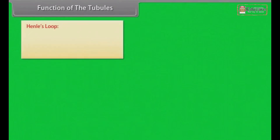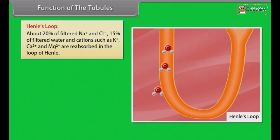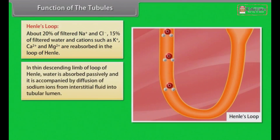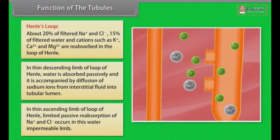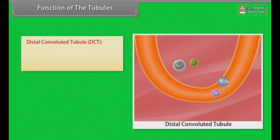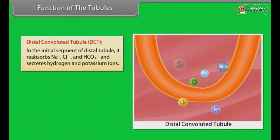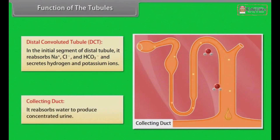Function of the Tubules — Henle's Loop and DCT: About 20% of filtered Na+ and Cl-, 15% of filtered water, and cations such as K+, Ca2+ and Mg2+ are reabsorbed in the loop of Henle. In the thin descending limb, water is absorbed passively, accompanied by diffusion of sodium ions from interstitial fluid into the tubular lumen. In the thin ascending limb, limited passive reabsorption of Na+ and Cl- occurs; because of impermeability to water, the fluid leaving this limb is hypotonic relative to plasma. The distal convoluted tubule (DCT) reabsorbs Na+, Cl- and HCO3- and secretes hydrogen and potassium ions. The collecting duct reabsorbs water to produce concentrated urine.